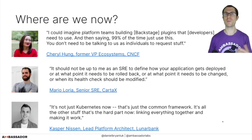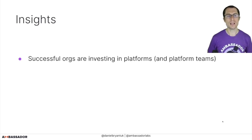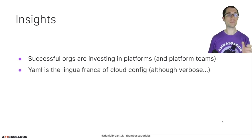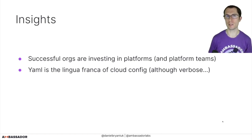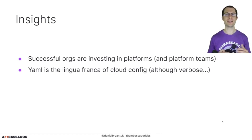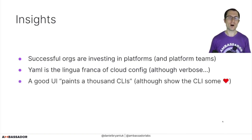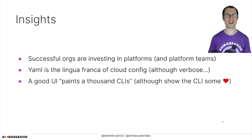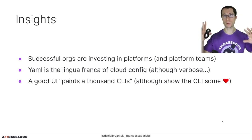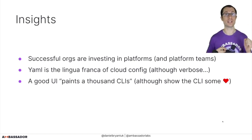Key insights: successful organizations are investing in platforms and platform teams. YAML is pretty much the lingua franca of cloud config, although we're seeing more and more auto-generation for YAML now — something we're looking into a lot at Ambassador Labs, because YAML is rather verbose to keep writing yourself. A good UI paints a thousand CLIs — I'm not saying don't show the CLI any love, but particularly in large enterprise contexts, a really good portal, dashboard, or service catalog takes you a long way in terms of developer experience. Some folks are simply happier in a UI.